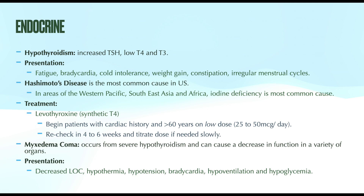Hashimoto's is confirmed with thyroid peroxidase antibodies, which are almost always elevated in these patients. A thyroid ultrasound can be beneficial, especially if there is asymmetry or tenderness on palpation. For a confirmed diagnosis of hypothyroidism, remember the lab values: when circulating T4 and T3 are low, the TSH works extra hard and is therefore high. If an initial TSH comes back elevated, repeat the TSH and add a T4 to confirm the diagnosis.